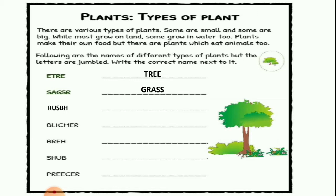Next is R-U-S-B-H. This is also a jumbled word — can you guess which word it is? It is shrub. Write S-H-R-U-B. Shrub.